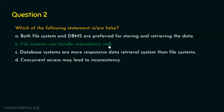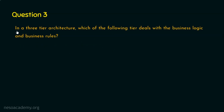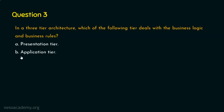We are done with question number two. Let's now move on to question number three: in a three-tier architecture, which of the following tier deals with the business logic and business rules? The options are: option A, presentation tier; option B, application tier; option C, data tier; and option D, none of the above. I request you to pause this video for a while and think about the right answer.